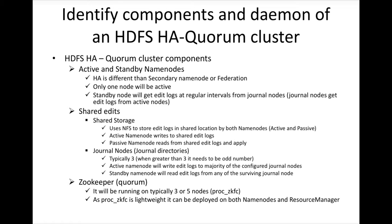The standby node will get edit logs at regular intervals from journal nodes or shared edits. There are two ways to get these edit logs. The first and simpler way is by providing shared storage — it uses NFS to store edit logs in a shared location accessible by both name nodes. The active name node writes to shared edit logs and the passive name node reads from them. The other way is by using journal nodes. Typically we will have three of them. When an entry is made into the name node, the active name node will try to write to a majority of the journal nodes. The standby name node will then read edit logs from any of the surviving journal nodes.